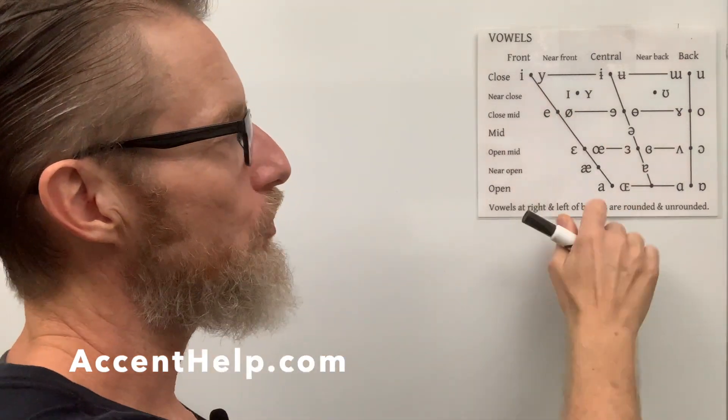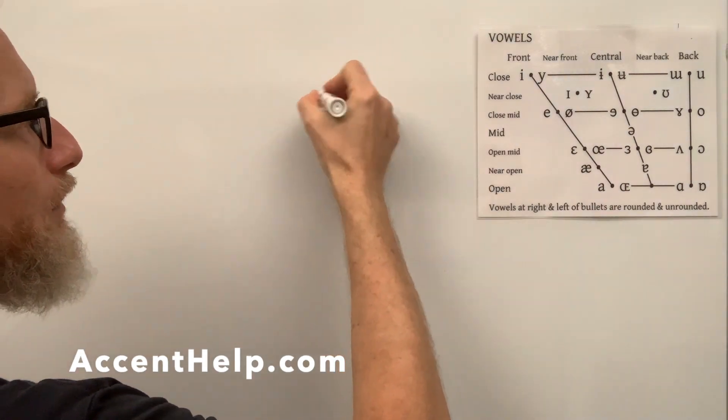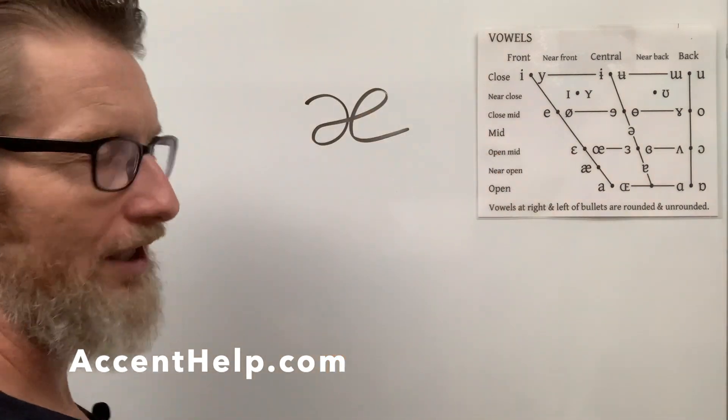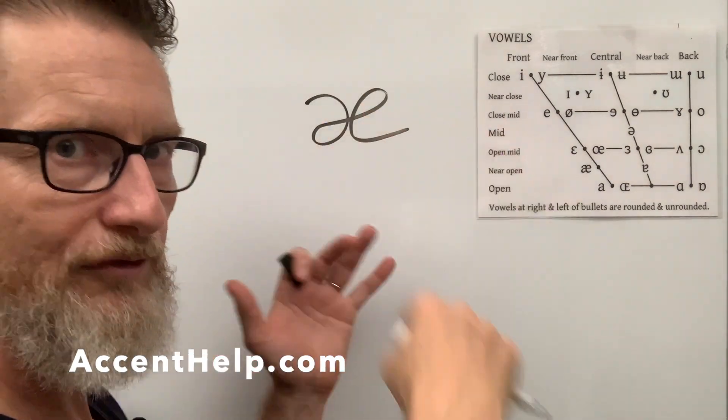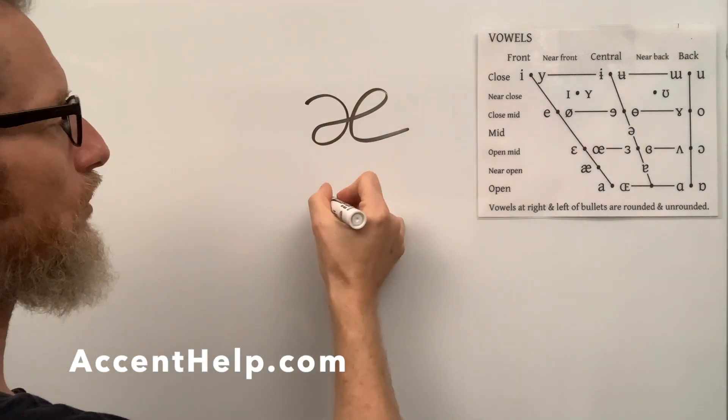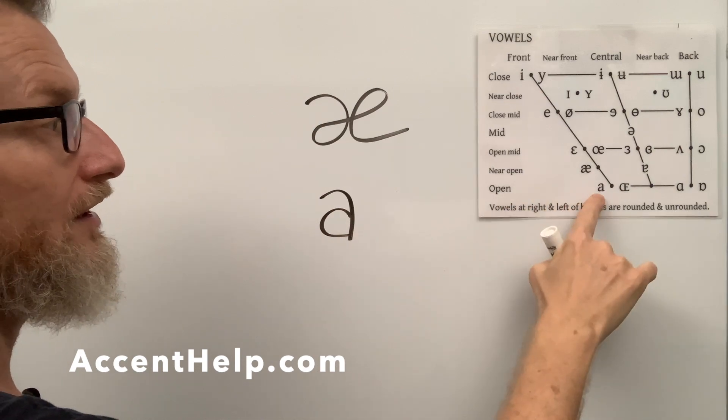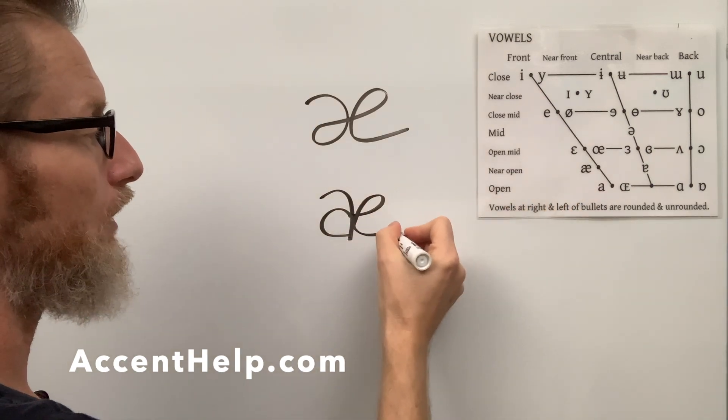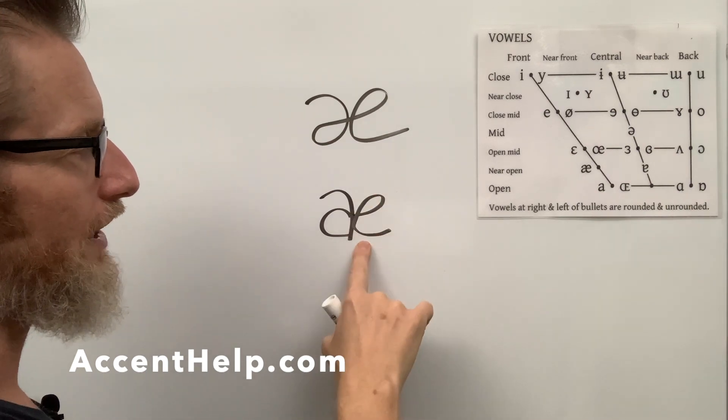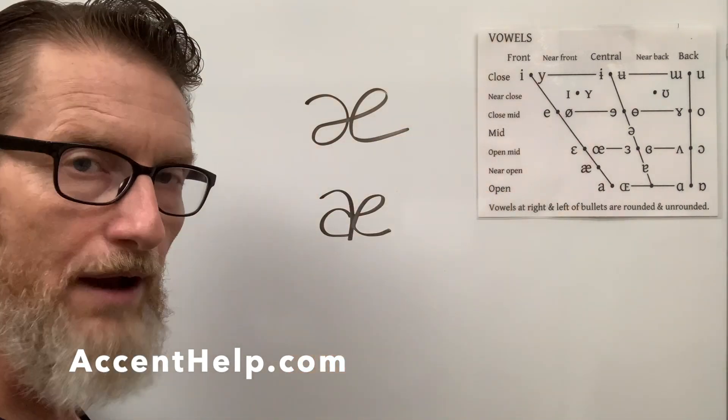We're continuing down the front to our final major front vowel that is very commonly used by English speakers, and that is the ash sound. The one that looks to me a little bit like you're on the interstate, and you're at a big clover leaf on the interstate driving around, and you can never get off. So this is the ash symbol, which is sort of like a simplified version of this symbol followed by the lowercase e, so this typed a, and then this lowercase e, a simplified version is that one right there.